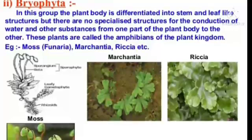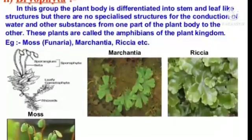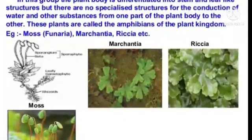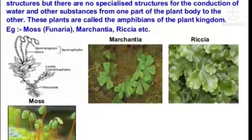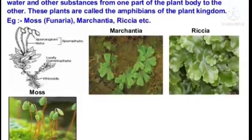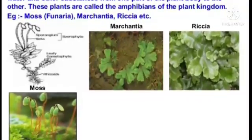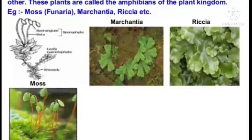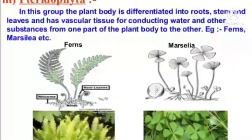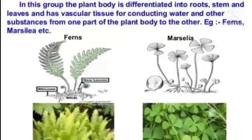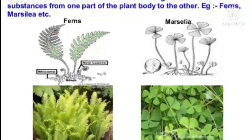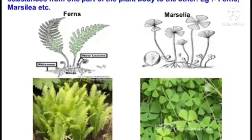Bryophyta: In this group, the plant body is differentiated into stem and leaf-like structures, but there are no specialized structures for the conduction of water and other substances from one part of the plant body to the other. These plants are called the amphibians of the plant kingdom. Pteridophyta: In this group, the plant body is differentiated into roots, stem, and leaves, and has vascular tissue for conducting water and other substances. Examples: ferns, Marsilea, etc.